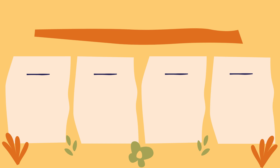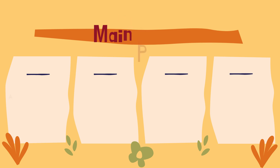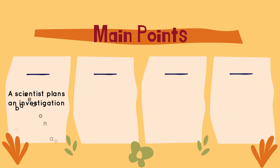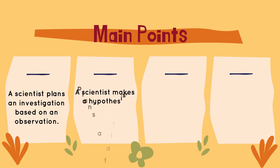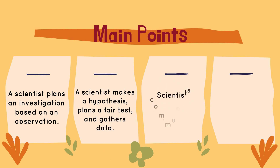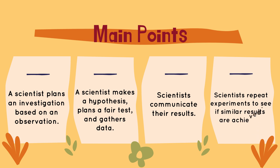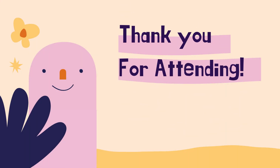Before we finish, let's take a quick look at the main points we covered. A scientist plans an investigation based on observations. A scientist makes a hypothesis, plans a fair test, and gathers data. Scientists communicate their results. Scientists repeat experiments to see if similar results are achieved. Thank you for attending our session — I'll see you next class. Goodbye!